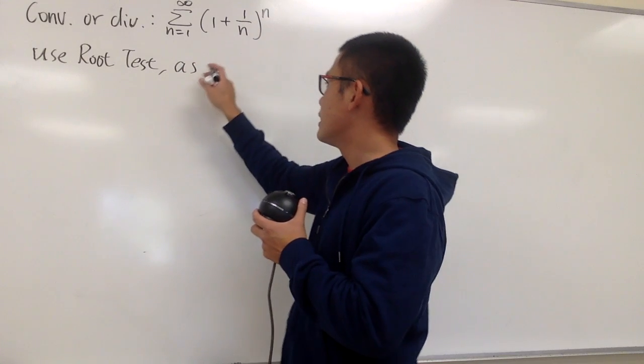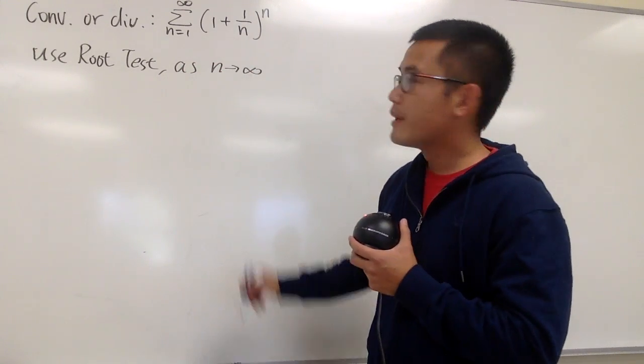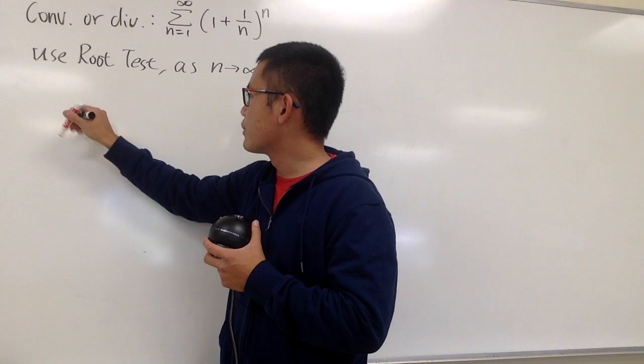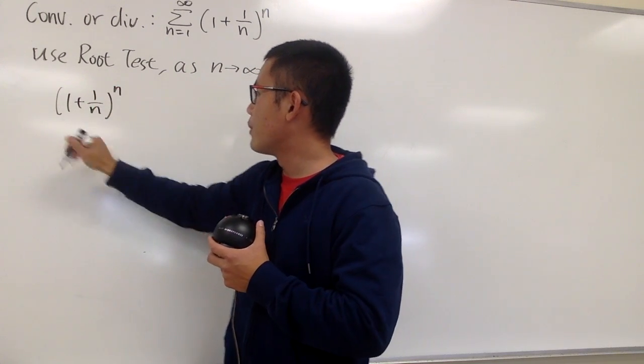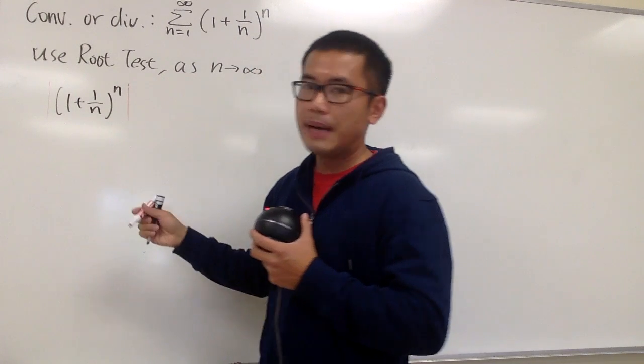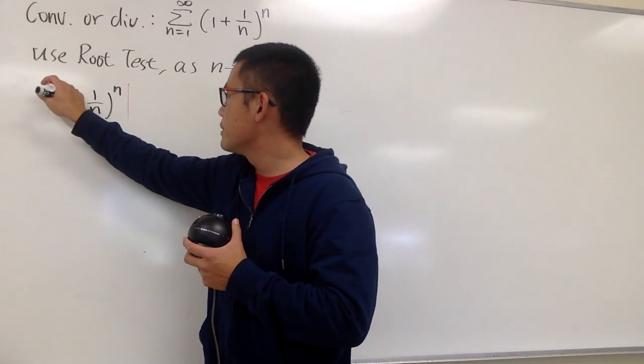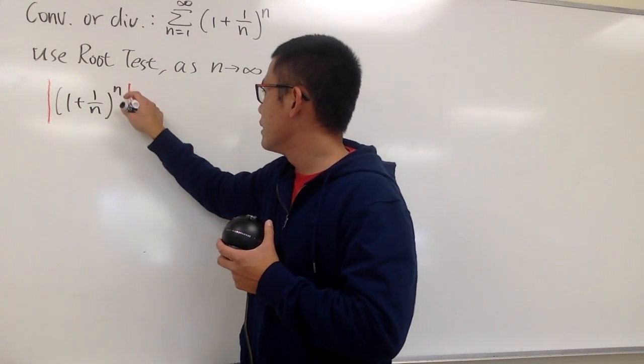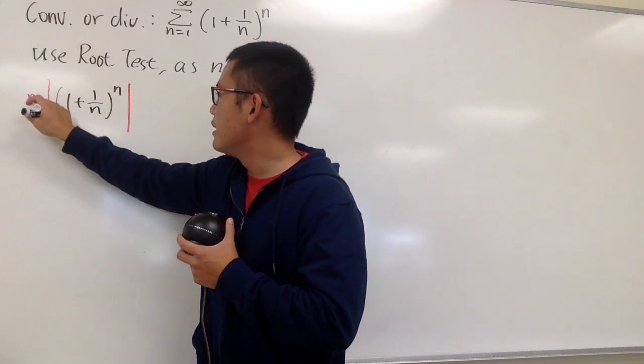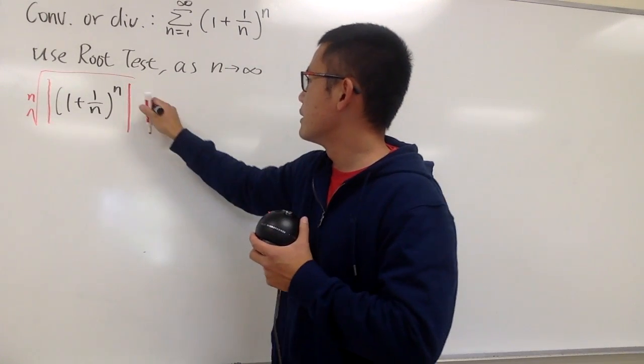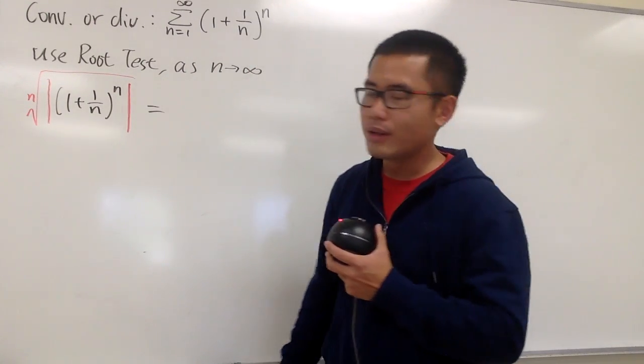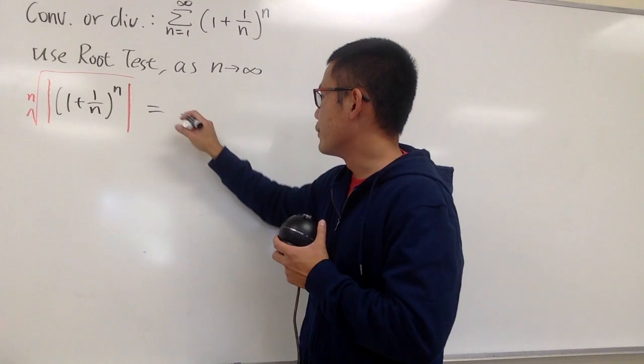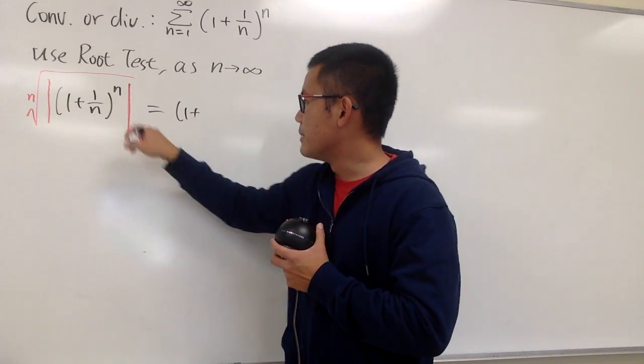And to do the root test, we have to take the limit as n goes to infinity, and this time, I will write this down right here: 1 plus 1 over n to the nth power. Technically, we take the absolute value, and we take the nth root, like this. And the nth root and the nth power, they cancel out. The absolute value doesn't matter, by the way, because everything is positive.